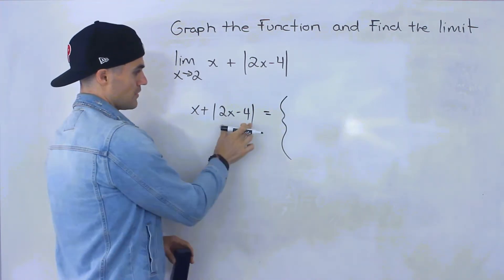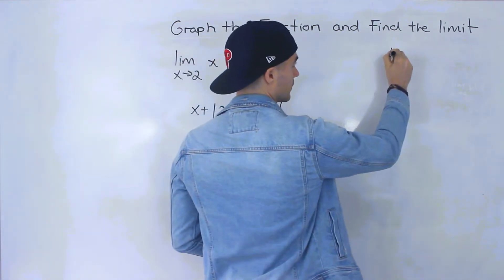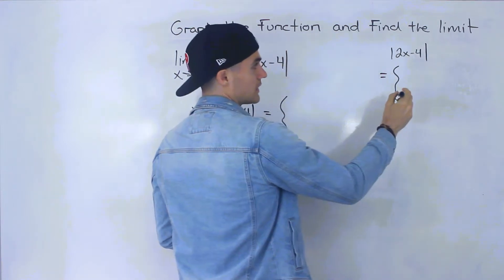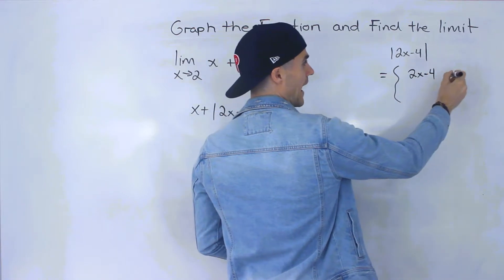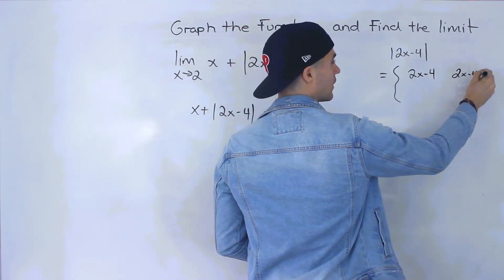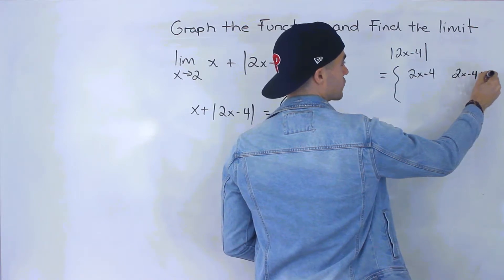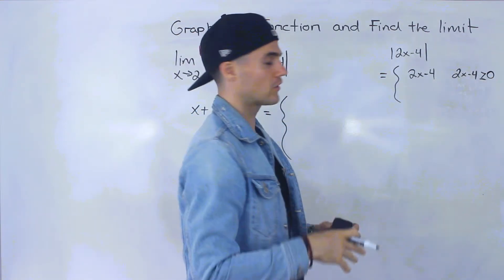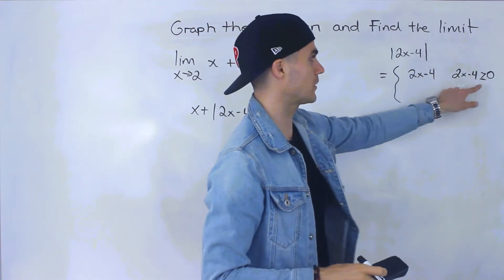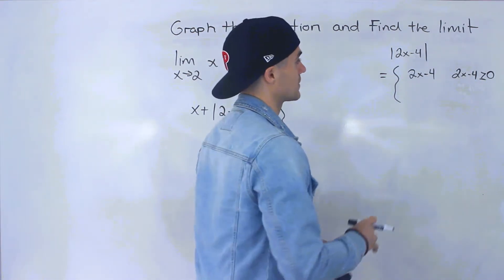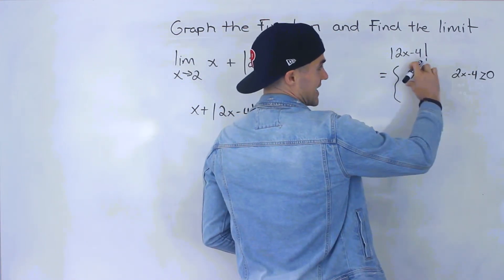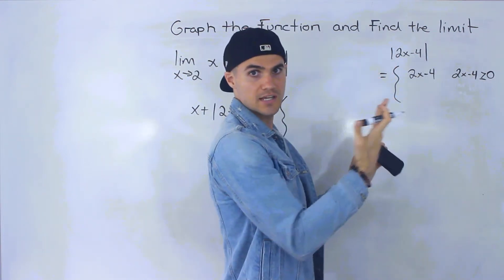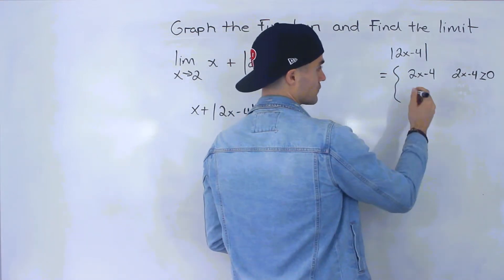This 2x minus 4 is going to equal 2x minus 4, but that's only going to happen when 2x minus 4 is greater than or equal to 0. It stays the same when that expression is positive or zero, because absolute value takes anything negative and turns it positive — but if it's already positive, we don't have to do any transformations.